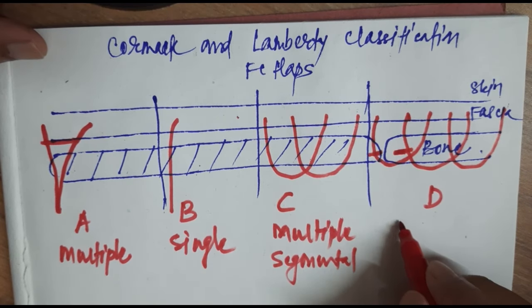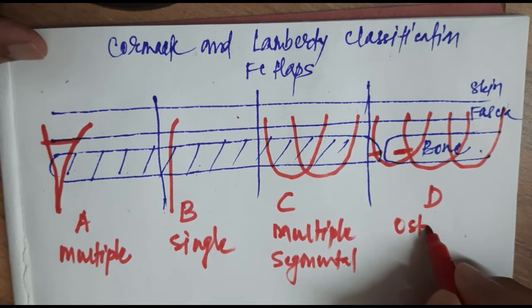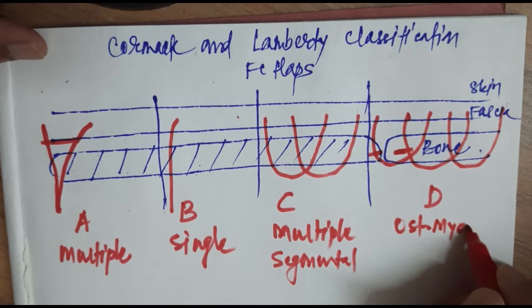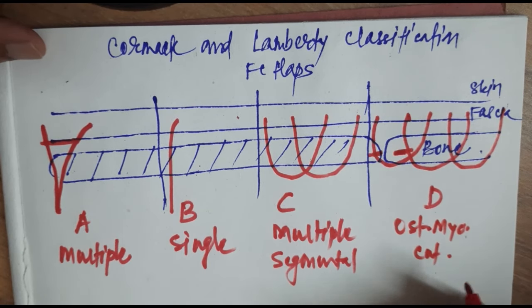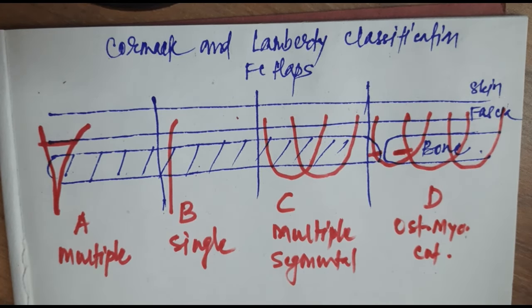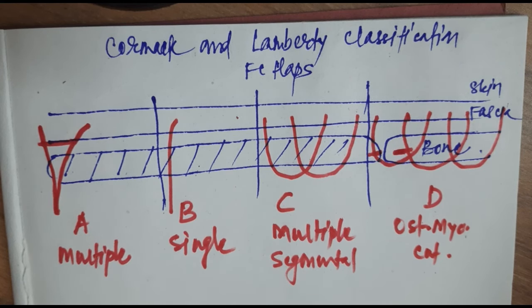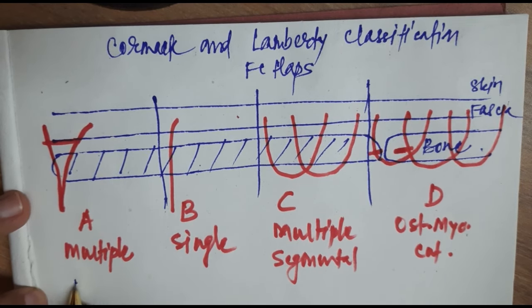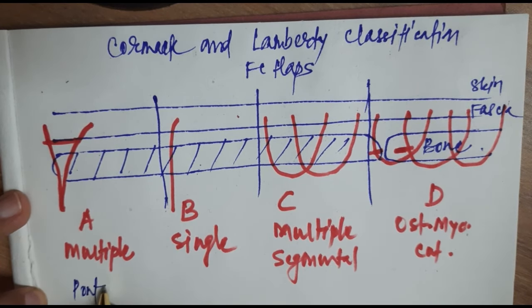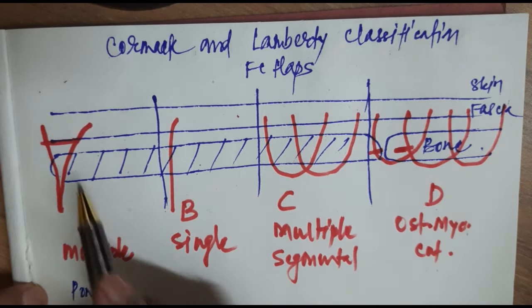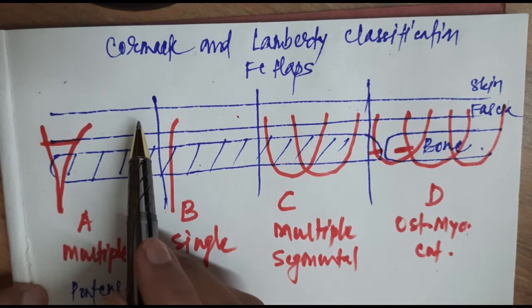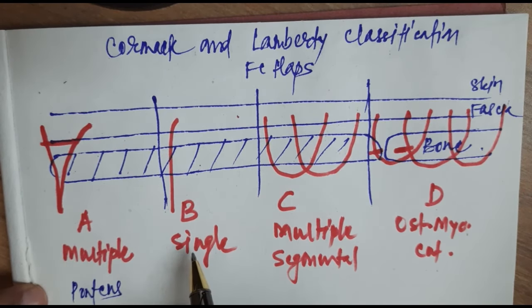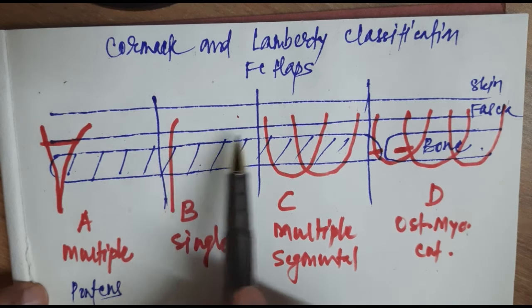So this is osteomyocutaneous perforators. If we see the examples, type A is the classical flap with multiple perforators at the base of the flap. Type B has a single solitary perforator that supplies the flap at the base.